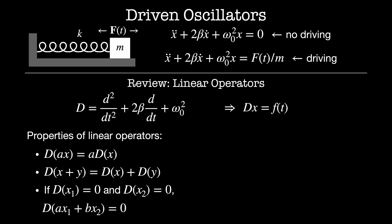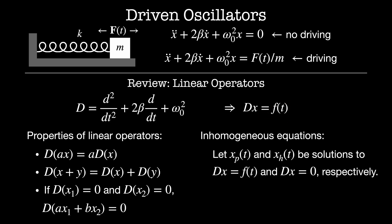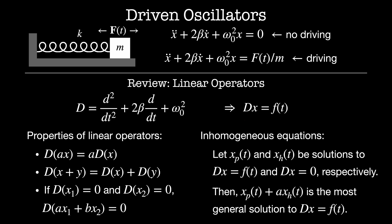The other thing I want to discuss is inhomogeneous equations. Homogeneous equations are of the form Dx equals zero. Inhomogeneous equations are where the differential operator acting on x equals something that is not zero, in this case f of t. If I have found a particular solution xp of t to Dx equals f of t, and I already know the homogeneous solutions xh of t to Dx equals zero, then the most general solution is xp of t plus a linear superposition of the homogeneous solutions.